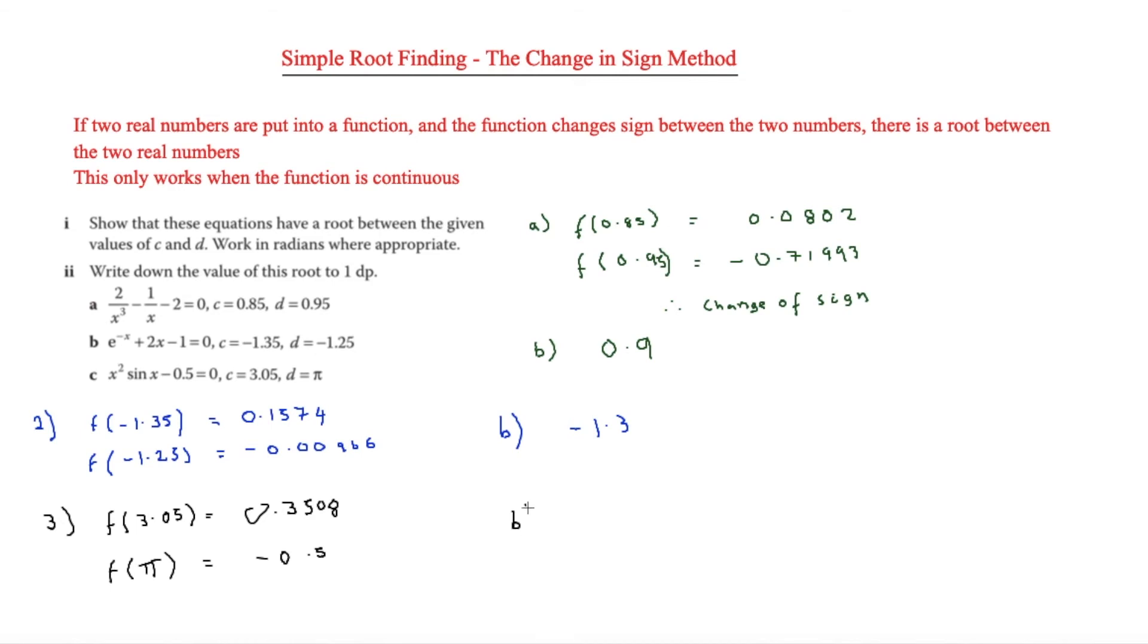For part B, we need to look at the difference. We've got pi and we've also got 3.05. Pi is obviously 3.14, so that means it's going to be 3.1.